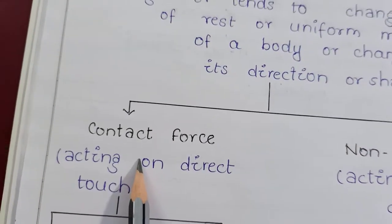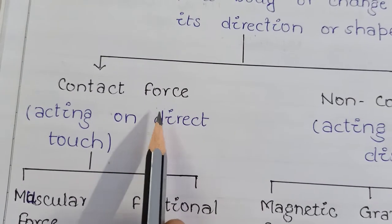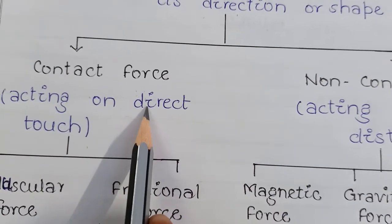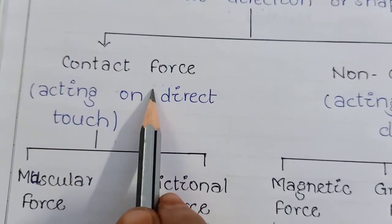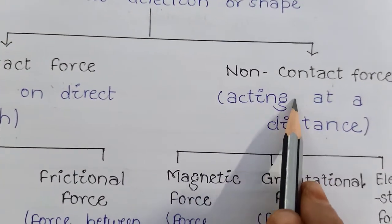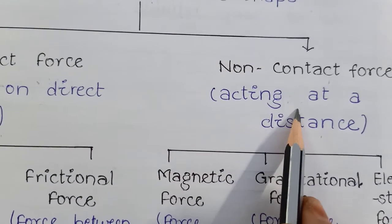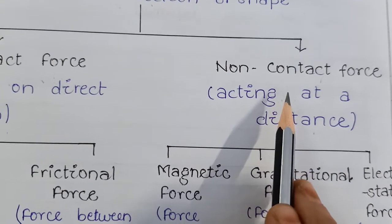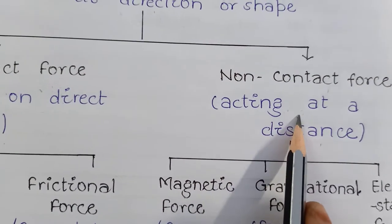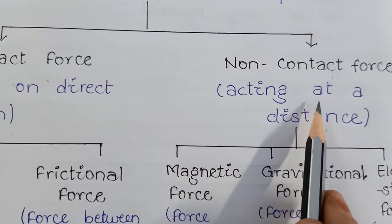All the forces which act on a body directly or through a connector are called contact forces. Non-contact forces are those which do not make direct contact with a body but act through space — these are called forces at a distance, or non-contact forces.